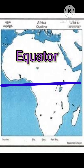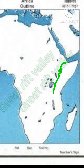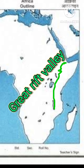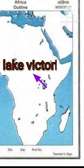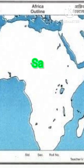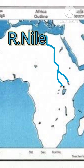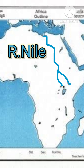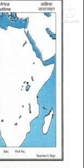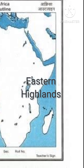The equator is dividing the Africa continent into two. The Great Rift Valley and Lake Victoria is the second largest lake in the world. Savannah is the grassland of Africa. River Nile is the world's longest river, and this is the eastern highlands of Africa.